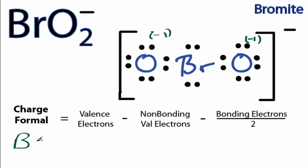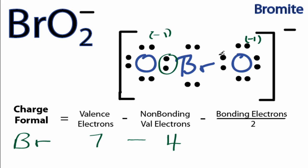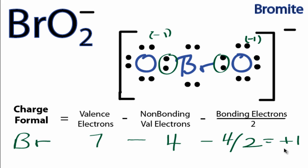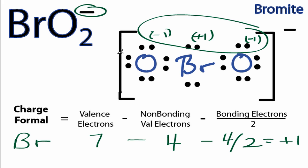For the bromine, it has 7 valence electrons from the periodic table. Bromine has 4 non-bonding valence electrons and 4 bonding electrons. Dividing that by 2, we end up with a positive 1. If you add all of these formal charges up, you will get a negative 1, which makes sense because it's a negative ion.